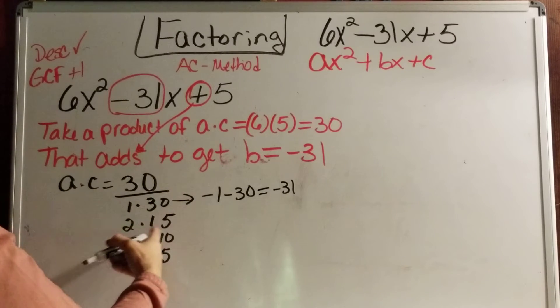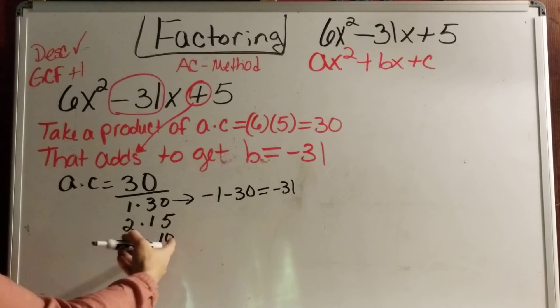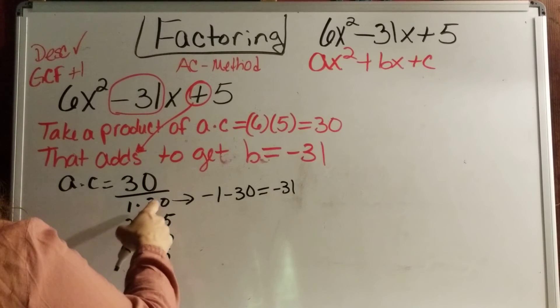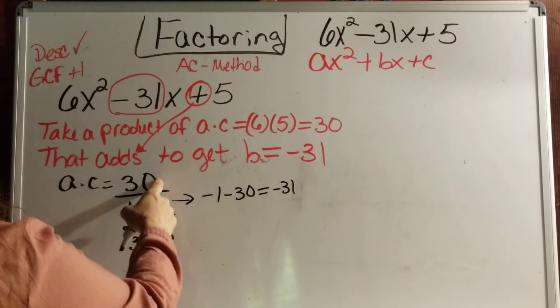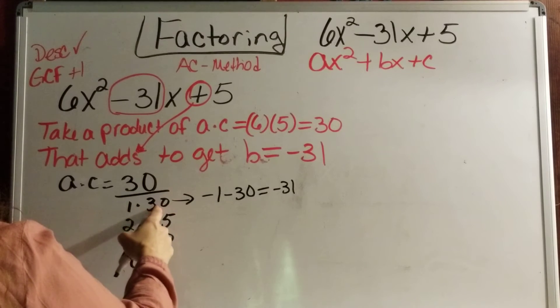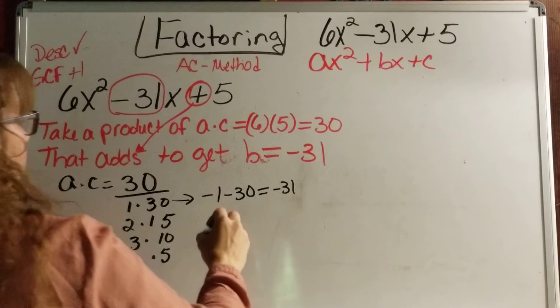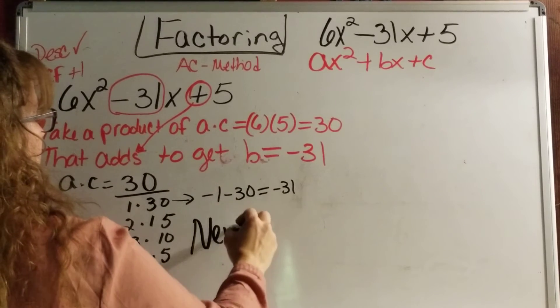If I said we're going to add, and the signs have to be the same since we're adding, then B says they're both going to be negative. So it's negative 1 minus 30. And does that give me negative 31? I'm going to say yes, that does. But 1 times 30 is 30. 1 plus 30 is 31. And we got to give them both negatives. So we got a new middle.